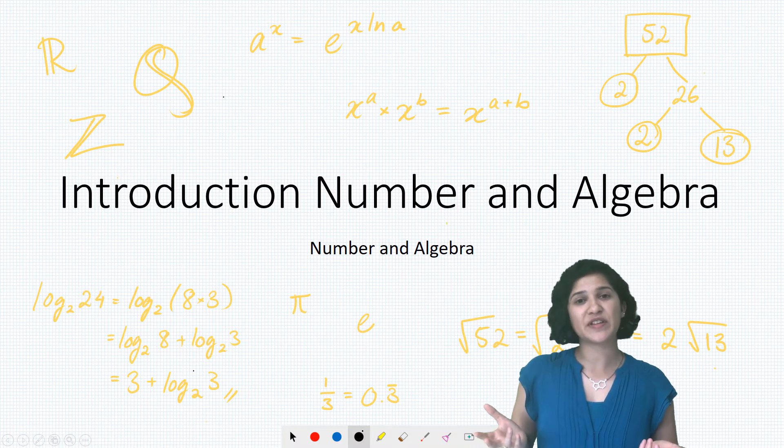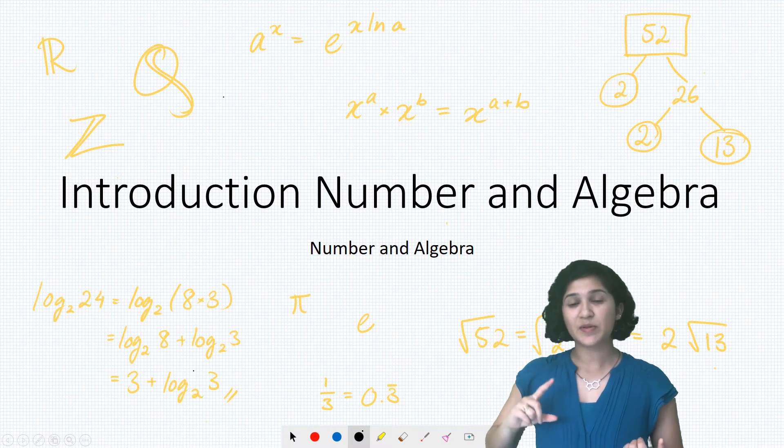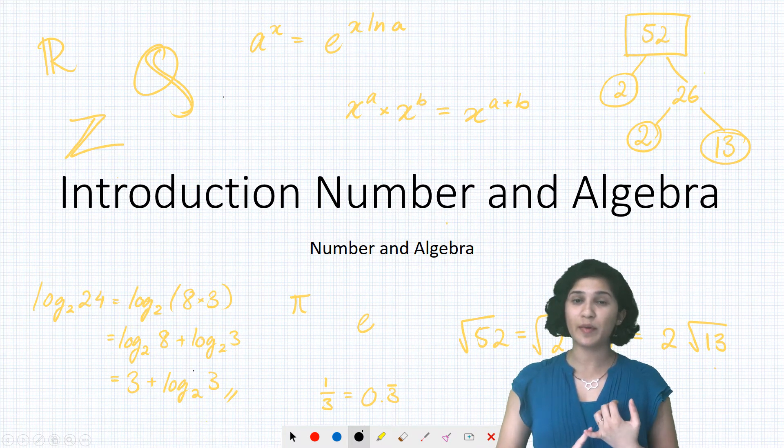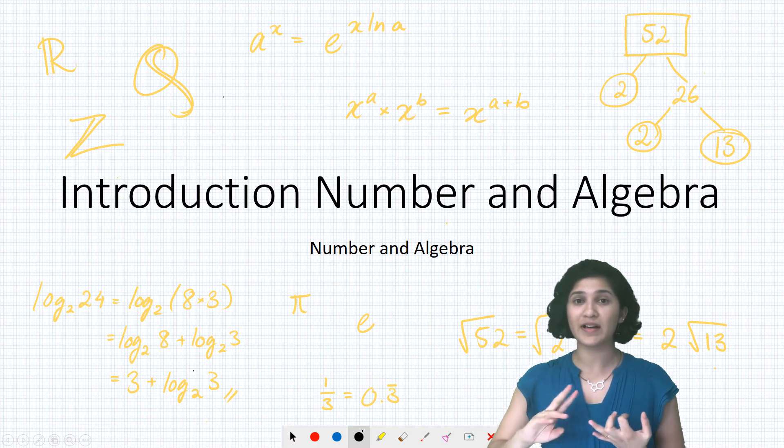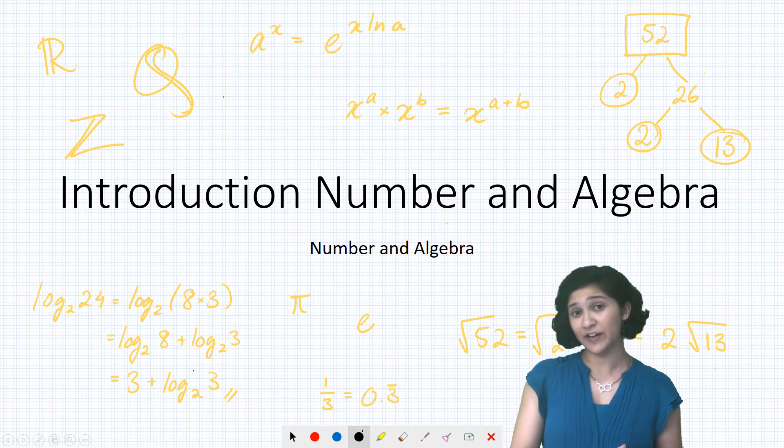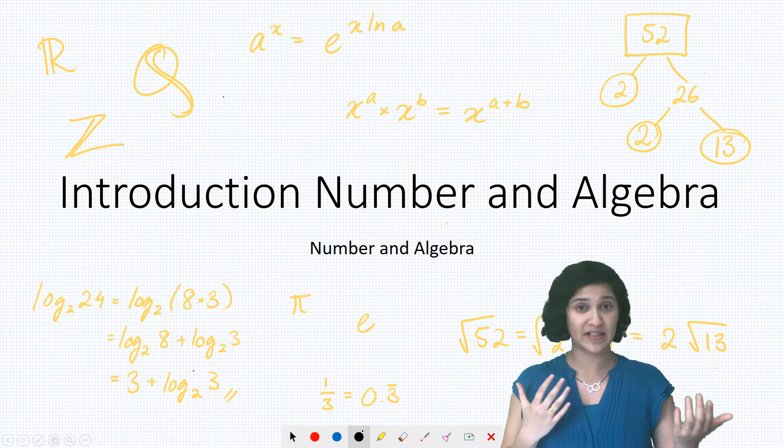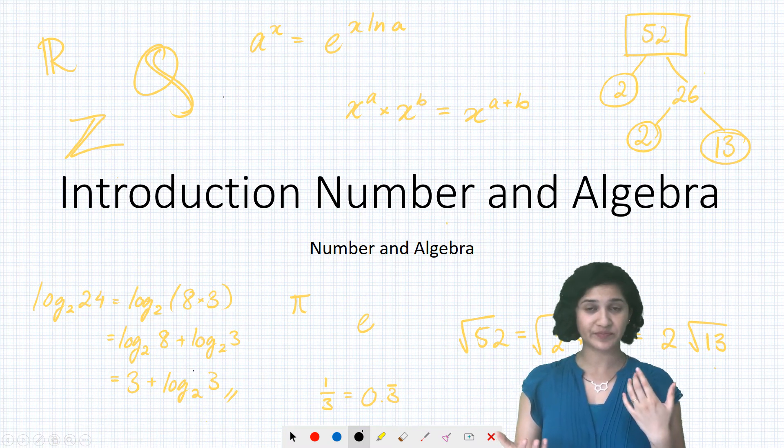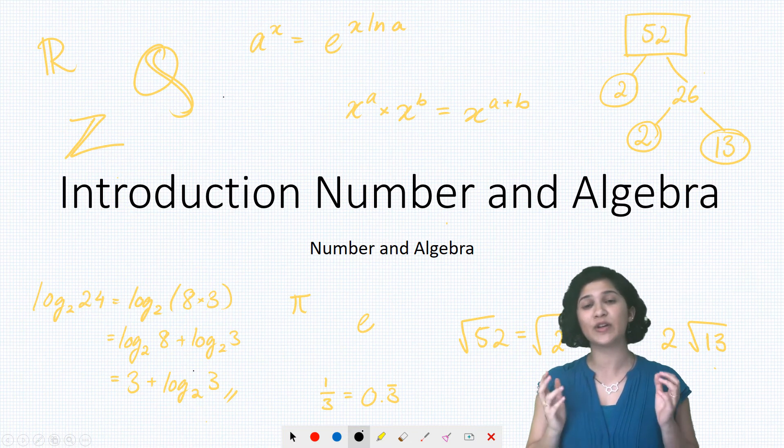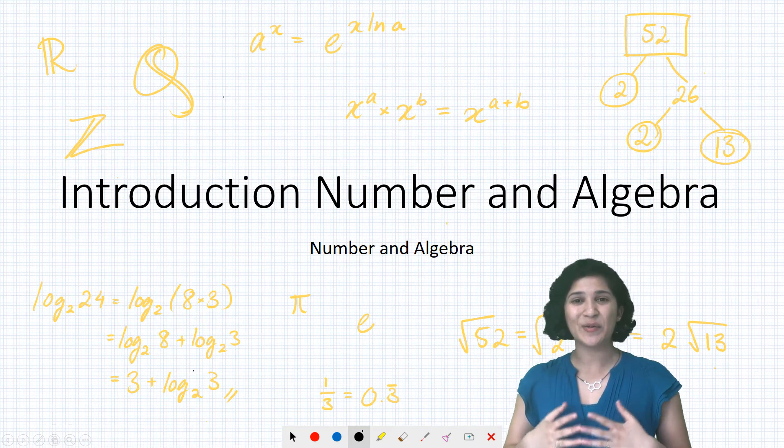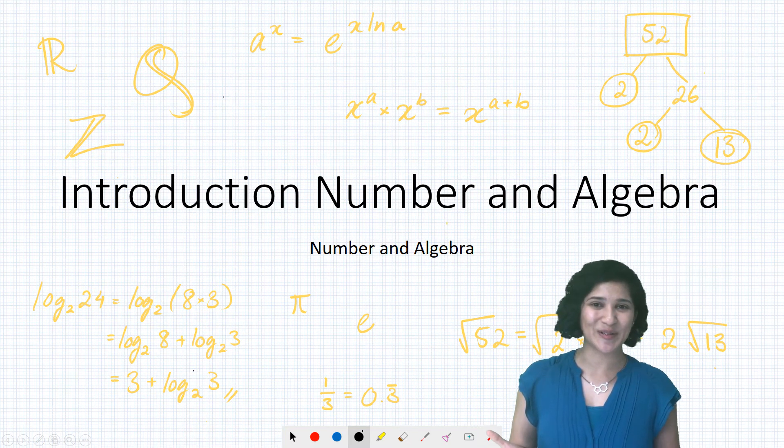In the first half of this topic, we're going to be looking at number. We'll start by looking at different types of numbers like real numbers, integers, rational and irrational numbers. We'll also look at fractions and decimals and how to convert between them. And then we're going to look in depth at surds, which is a topic that gives a lot of students trouble.